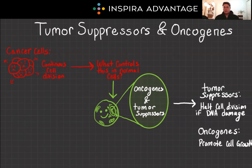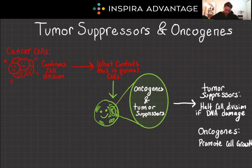A critical thing you want to understand for the MCAT is that cancer is always due to a gene mutation. You can expect anywhere from one to six questions on the MCAT that require you to really understand what cancer is and what causes it: uncontrolled cell growth and a gene mutation.